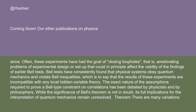Bell tests have consistently found that physical systems obey quantum mechanics and violate Bell inequalities, which is to say that the results of these experiments are incompatible with any local hidden variable theory. The exact nature of the assumptions required to prove a Bell-type constraint on correlations has been debated by physicists and by philosophers. While the significance of Bell's theorem is not in doubt, its full implications for the interpretation of quantum mechanics remain unresolved.